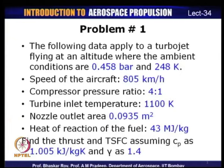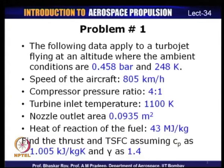Let us take a look at the first problem. Problem number one is a turbojet problem. The following data apply to a turbojet flying at an altitude where the ambient conditions are 0.458 bar and 248 Kelvin. Speed of the aircraft is 805 kilometers per hour. The compressor pressure ratio is 4:1, turbine inlet temperature is 1100 Kelvin. Nozzle outlet area is 0.0935 square meters. Heat of reaction of the fuel is 43 megajoules per kilogram. We are required to find the thrust and specific fuel consumption, assuming Cp = 1.005 kJ/kg·K and gamma = 1.4.